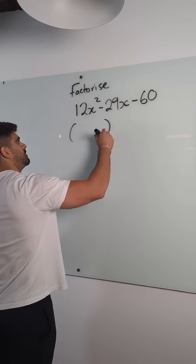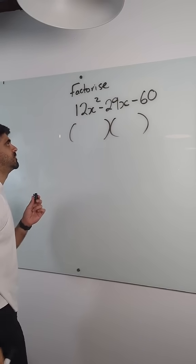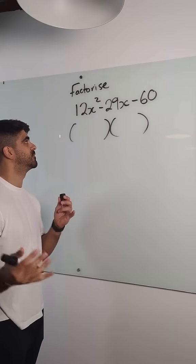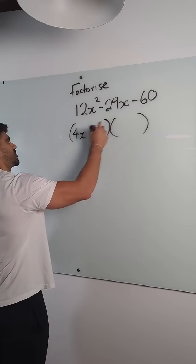So, traditional factorizing, we're thinking of what multiplies to give you 12x squared. Your options are obviously 1 and 12, 2 and 6, 3 and 4. The first option you should always try is the options closest together.